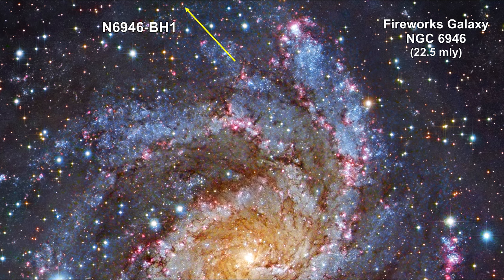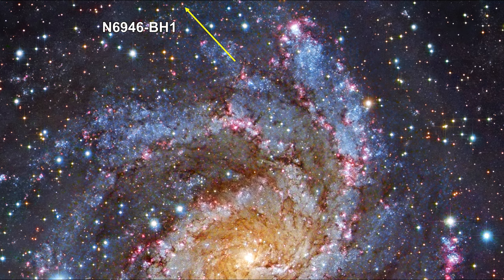They examined the star named N6946-BH1, a star 25 times more massive than our Sun. Stars this size usually end in a supernova explosion, leaving behind a neutron star or a black hole.